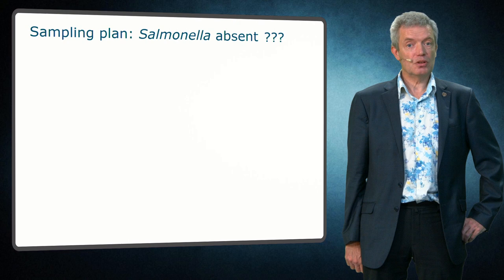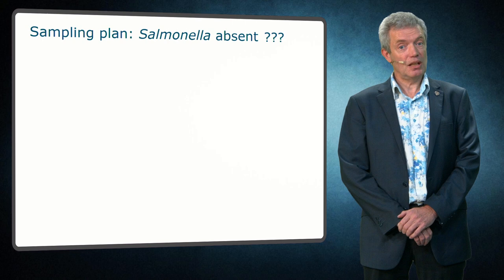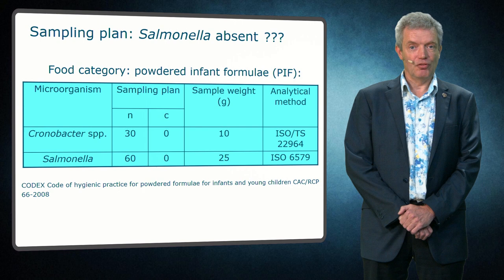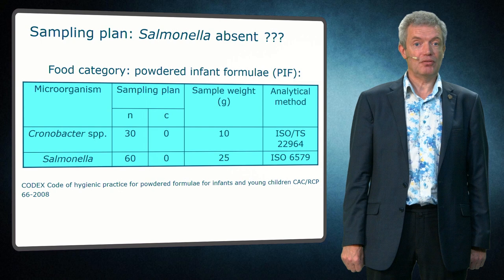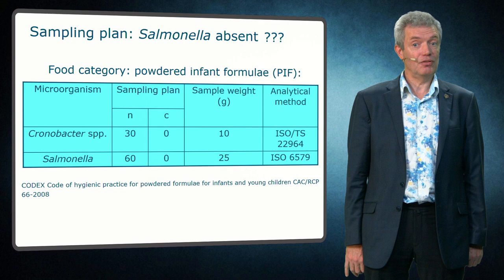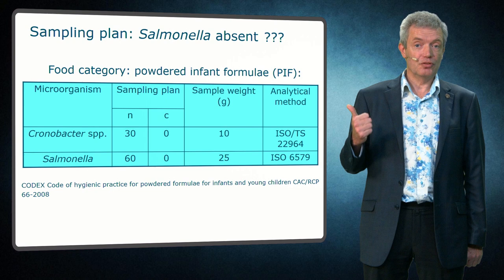Sometimes a microbiological criterion is described as absence of Salmonella. Is that a well-defined sampling plan? No. On this slide you see a sampling plan for powdered infant formula for Cronobacter and Salmonella. In this sampling plan you have to take 30 samples of sample weight 10 grams for Cronobacter and 60 samples of sample weight 25 grams for Salmonella. And C equals zero, meaning no sample is allowed to give a positive result. It is important that all three aspects are described: the number of samples N, the C value, and the sample weight.